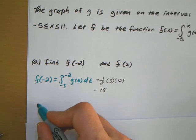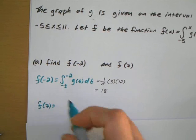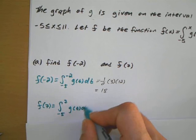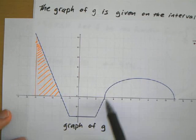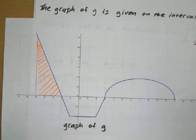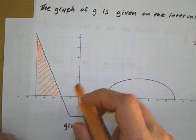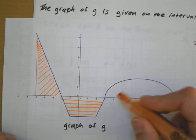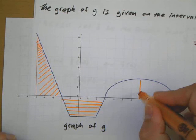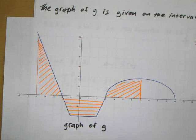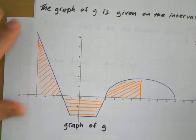For the next part, for f of 7, it's finding the integral from negative 5 all the way to 7. That means I have to go from negative 5 all the way across to 7 and find that area. I have some positive parts, some negative parts, and some more positive parts. So I'm going to split this up and combine them all together to get my value.